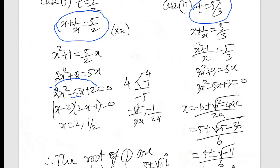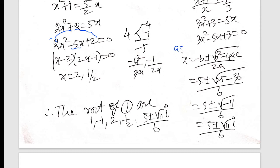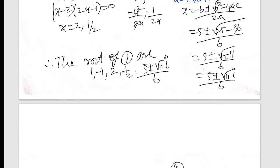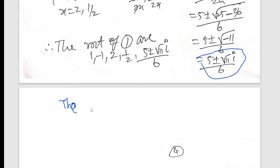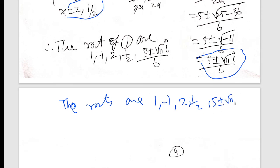Case 2, t equals 5 by 3: x plus 1 by x equals 5 by 3. Cross multiply: 3x squared plus 3 equals 5x, so 3x squared minus 5x plus 3 equals 0. Using the quadratic formula: a equals 3, b equals minus 5, c equals 3. The discriminant gives minus under the root, so this gives complex numbers. So finally the roots are: x equals 2, x equals 1/2, and the remaining roots are complex. So 6 roots found for x power 6.